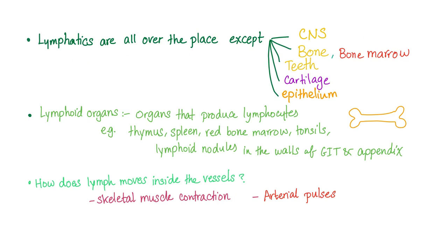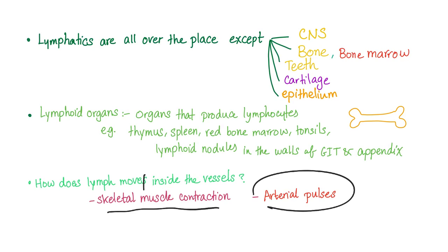Lymphatics are all over the place except in the CNS, bone, bone marrow, teeth, cartilage, and epithelium. Lymphoid organs are organs that produce lymphocytes. Lymph moves inside the vessels by skeletal muscle contraction and arterial pulsation, similar to veins.